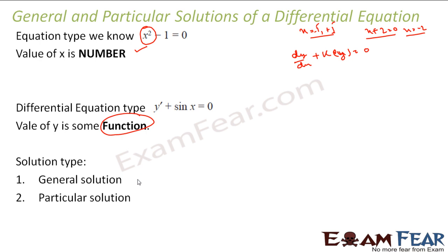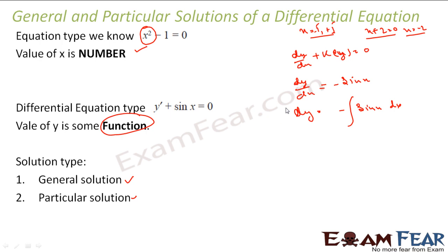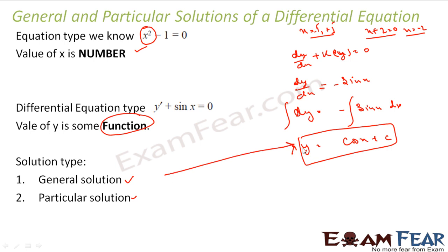Since the solution of a differential equation is a function, it has two types of solutions: either a general solution or a particular solution. For example, if dy/dx = −sin x, then dy = −sin x dx. Integrating both sides gives y = cos x + c. This is a general solution because the constant c is not known — c can be 1, 2, 3, 4, 5, giving multiple solutions.